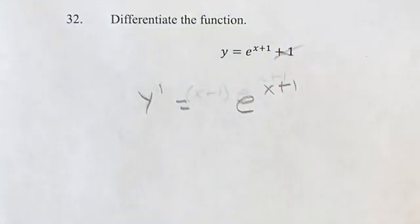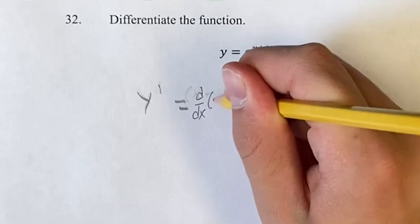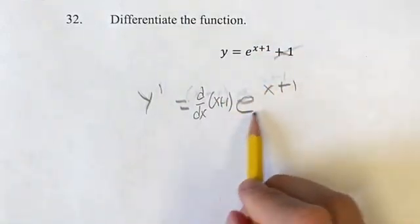But then we also have to take into account the derivative of the exponent. So you can think of d over dx times x plus 1 times e to the x plus 1.